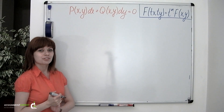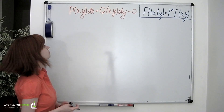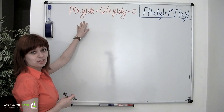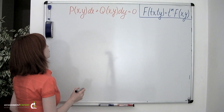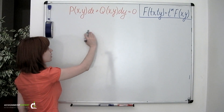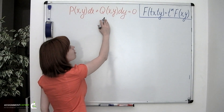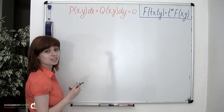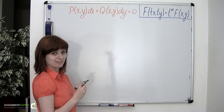Now, a differential equation of this form is called homogeneous if both P(x,y) and Q(x,y) functions are homogeneous of the same degree.